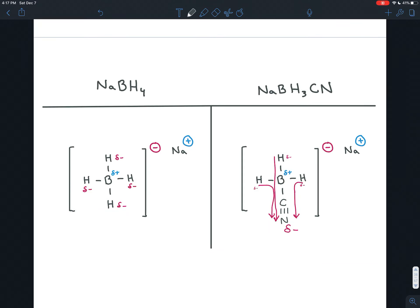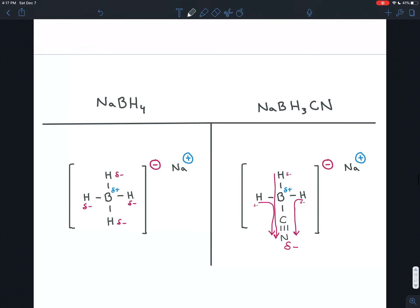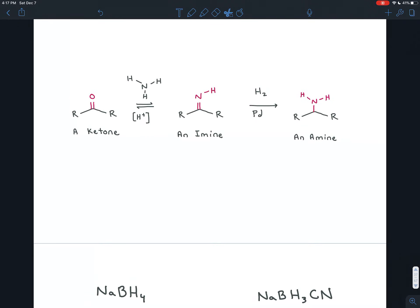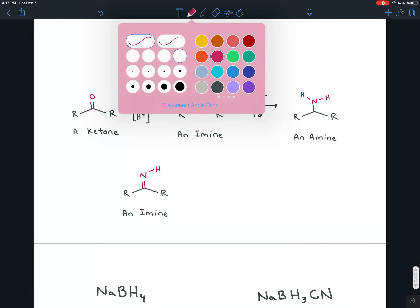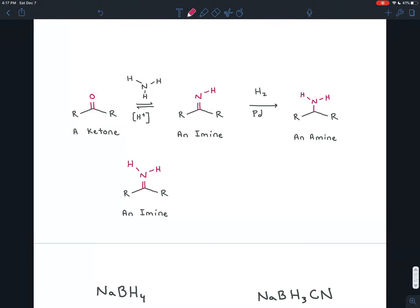So sodium cyanoborohydride is still a reducing agent. It's just much weaker. And what you might remember is that in this process, as a ketone turns into an imine, there is a point at which, before the last proton transfer, there is a point at which the nitrogen has an extra hydrogen and a full positive charge. And actually, let me put that in blue. A full positive charge. And this was called an iminium ion.